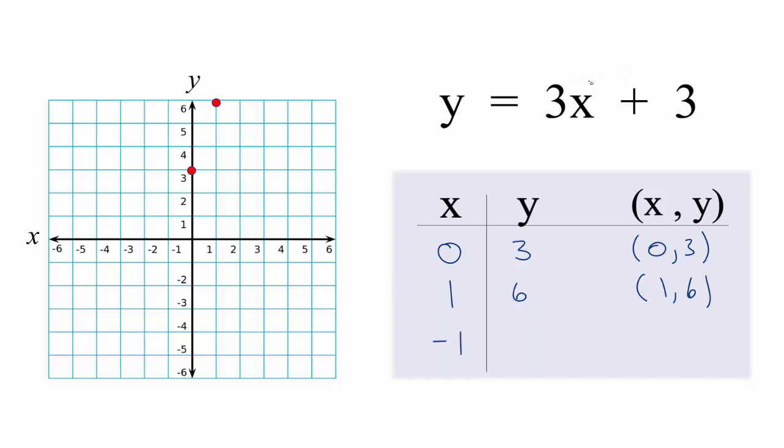So let's do -1. If x is -1, 3 times -1 is -3 plus 3, that'll give us 0 for y. So we have x is -1 and then y is 0, so we'll keep it right there. And you can see we have this line - we can put a line over it, and this is the graph for y equals 3x plus 3.